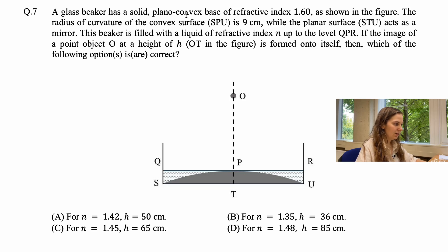Let us now move on to what was probably the hardest question on the physics part of this exam that 82 percent of students didn't even attempt to solve. And the question is the following. A glass beaker has a solid plano-convex base of refractive index 1.60, as shown in the figure. The radius of curvature of the convex surface SPU is 9 centimeters, while the planar surface STU acts as a mirror. This beaker is filled with a liquid of refractive index N up to level QPR. If the image of a point object O at the height of H, OT in the figure, is formed onto itself, then which of the following options is correct? And we're given four different options for refractive index and height, and our task is to determine if one or multiple of these are correct.